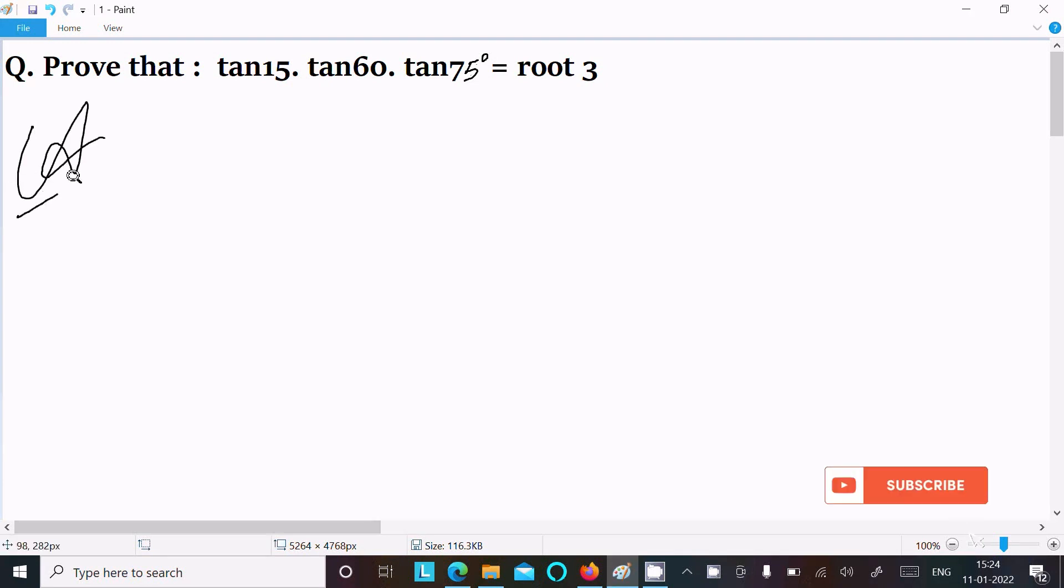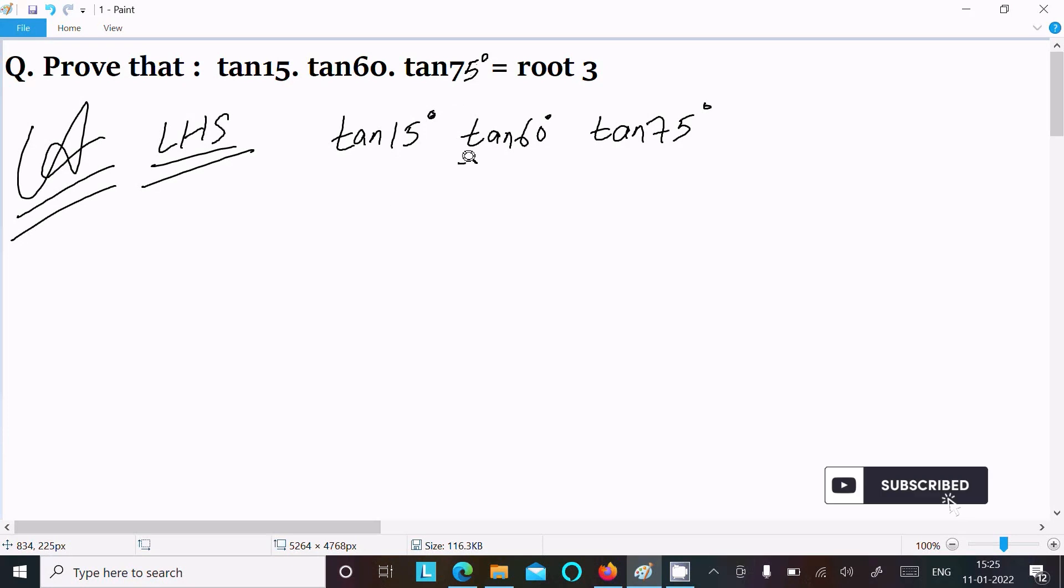So let's see the answer. First I am going to take the LHS, left hand side. On the left hand side: tan15·tan60·tan75. Now thereafter here, we know the value of tan60 that is root 3, and this I am going to change.